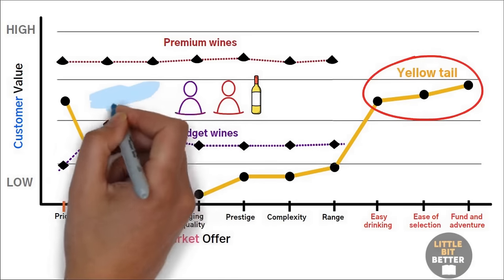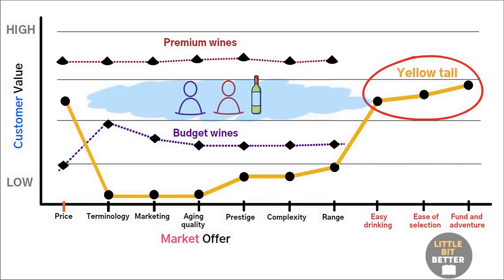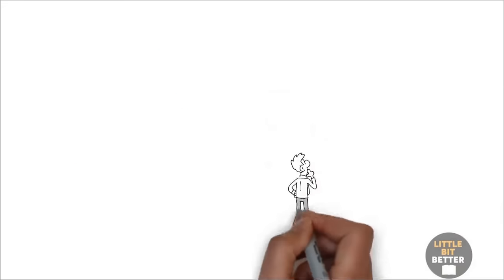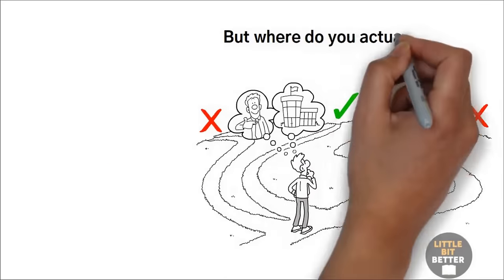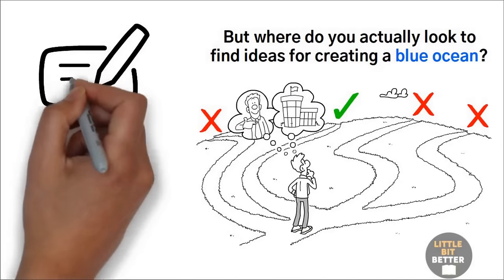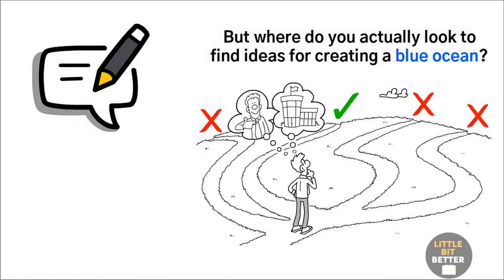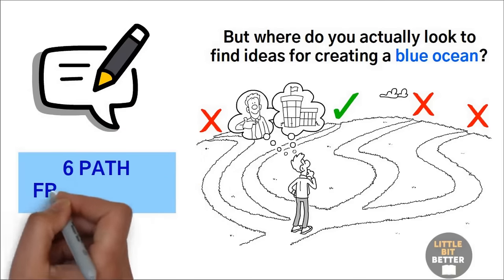The main idea of the Blue Ocean strategy is to create a new market by breaking away from the competition. In other words, making the competition irrelevant. But where do you actually look to find ideas for creating a Blue Ocean? Here are six practical tips that can help you to identify Blue Ocean opportunities. The authors call this six-path framework.